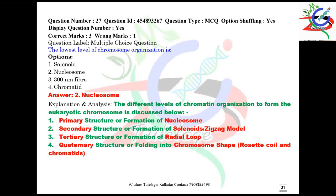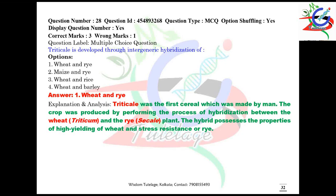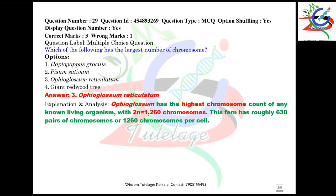In chromosome packaging, the primary structure is the formation of nucleosome; secondary structure is solenoid or zigzag model; tertiary structure is radial loop; and quaternary structure is chromosome shape. Question number 28: triticale is developed through intergeneric hybridization of wheat and rye.